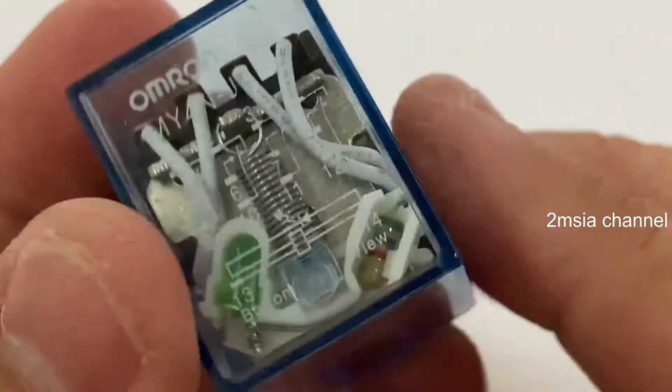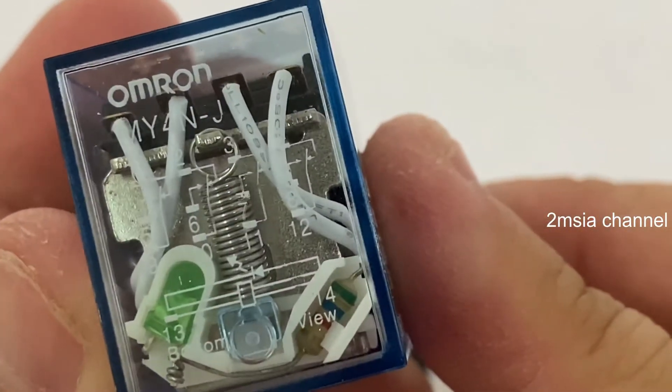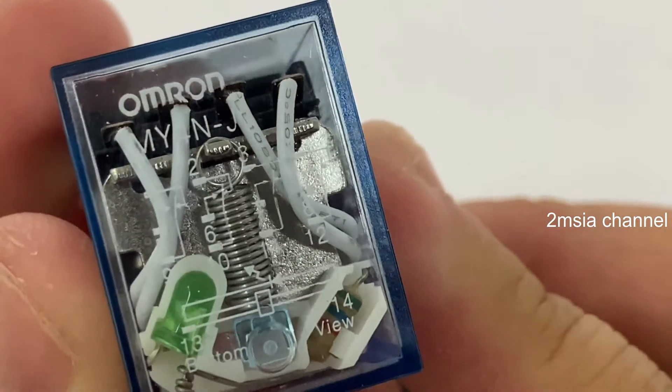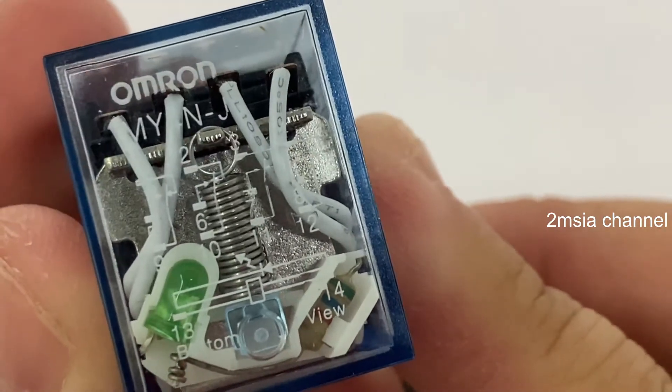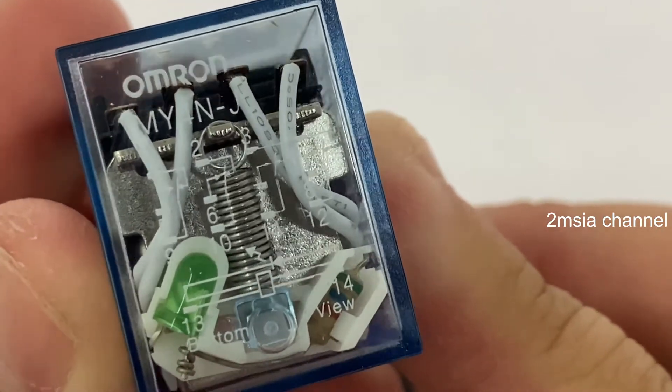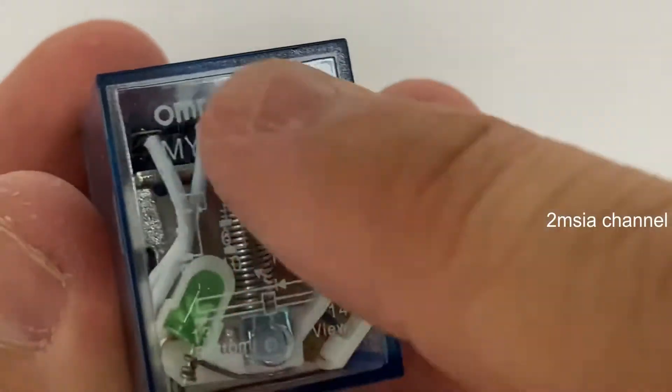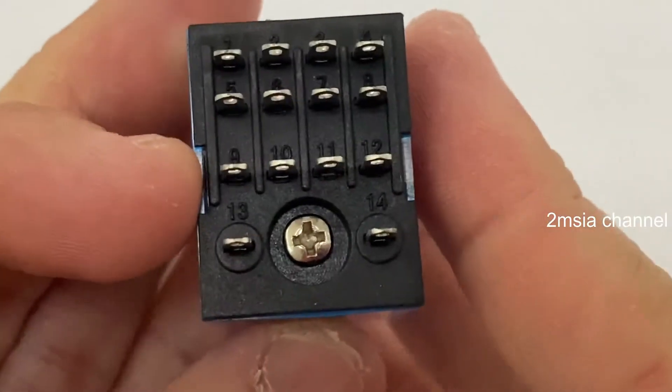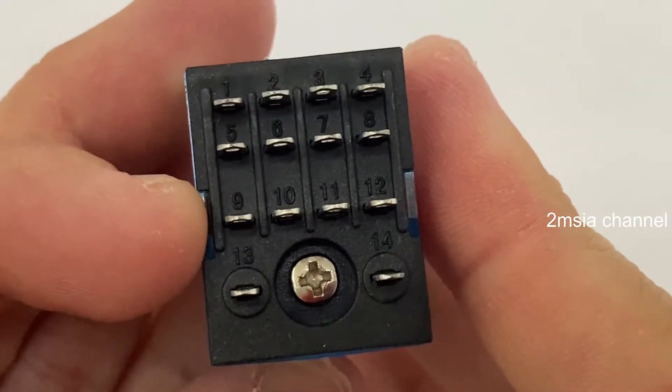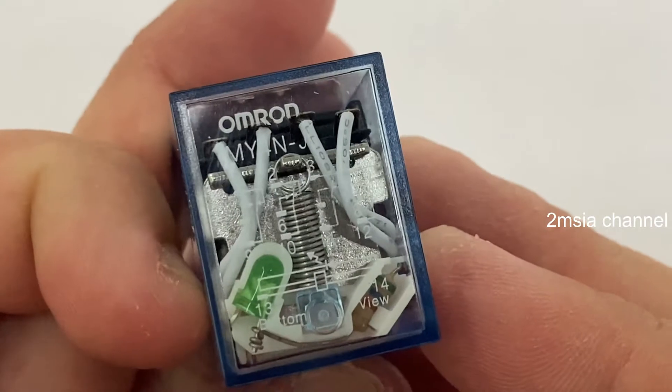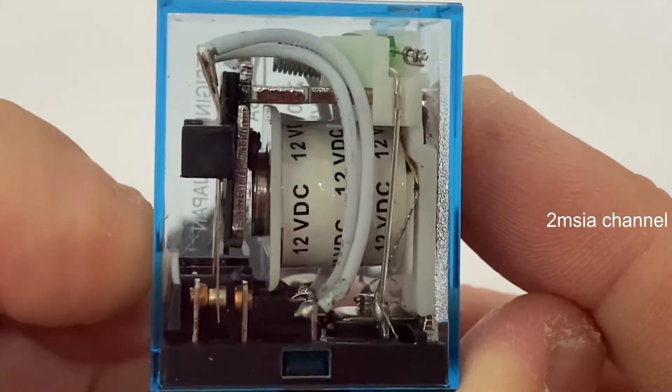Okay, so this is Omron MY4NJ. They have the diagram for you, how it runs through. This is all the bottom view. This drawing indicates the bottom here, and you can see back, okay, so inside.